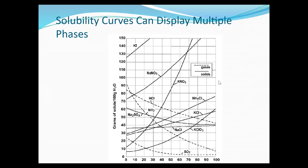Sometimes graphs include gases in the mix. Solid lines indicate solids, and dotted lines show solubility for gases. Remember that solids tend to increase in solubility with temperature. Gas lines show the opposite — they don't increase with temperature and have a smaller slope. Pressure is the factor that generally affects the solubility of gases more than temperature does.